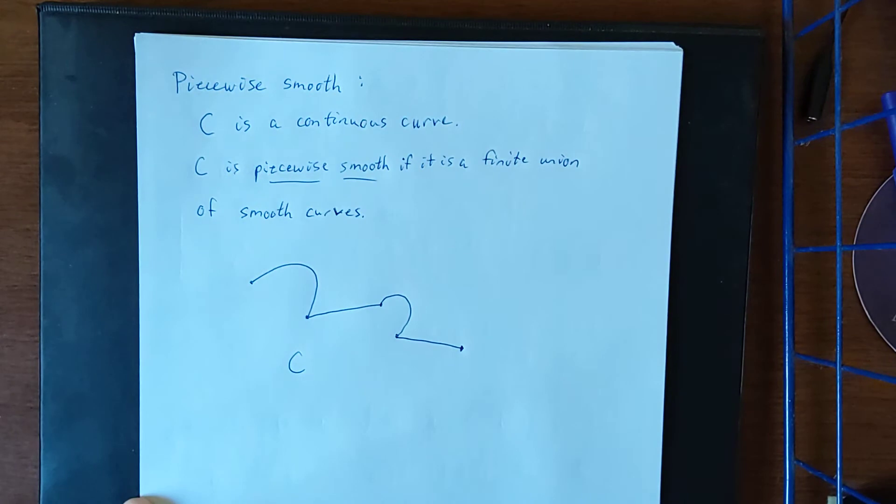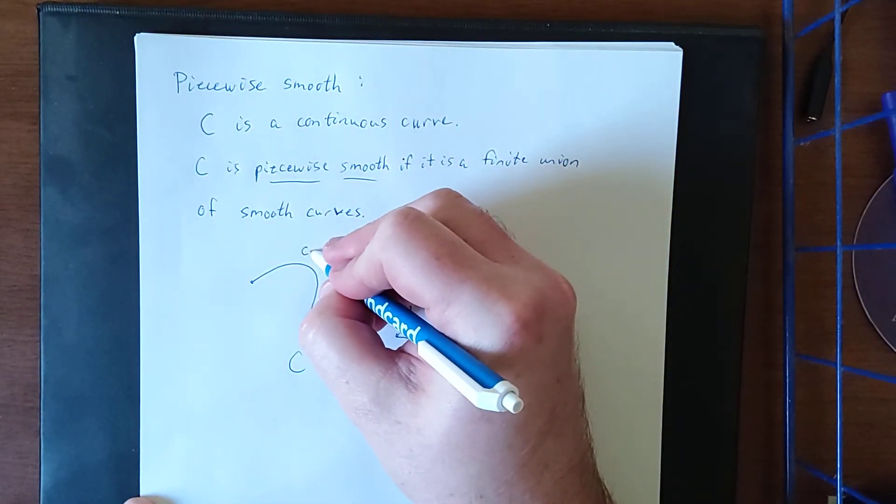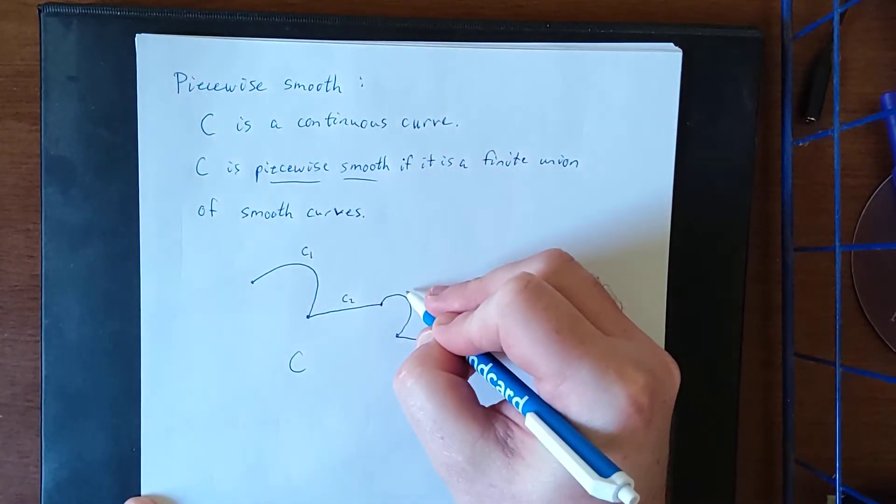So this entire curve is C. It's continuous because I was able to make it without lifting my writing utensil. What I see here, though, is a finite union of four piecewise smooth curves.